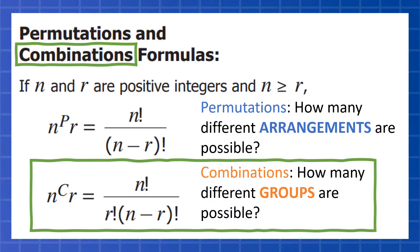This is a lot to throw at you at once, but I want you to focus on what's in that green box. Combinations are how many different groups are possible. Permutations are also how many different groups, but in permutations the order matters. Now, there are a lot of groups where the order doesn't matter.